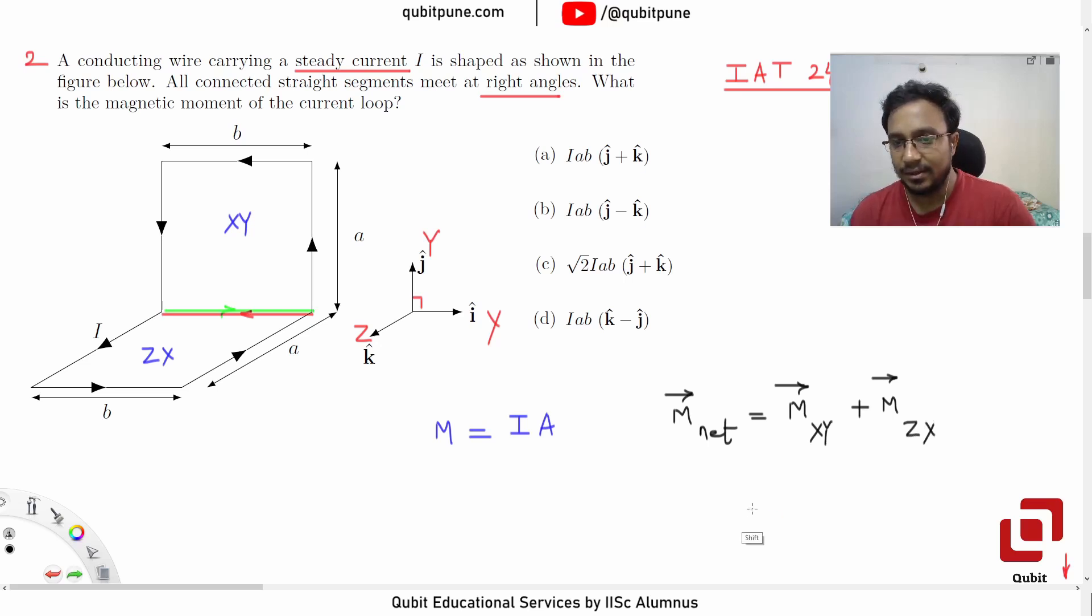And here is how we proceed. Firstly, let's determine the magnetic moment of the loop in the X-Y plane. That formula is already there, which is current into area, but that is only the magnitude. You also need to multiply it by the direction.